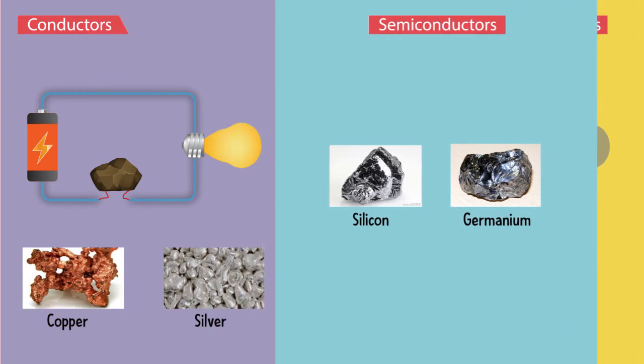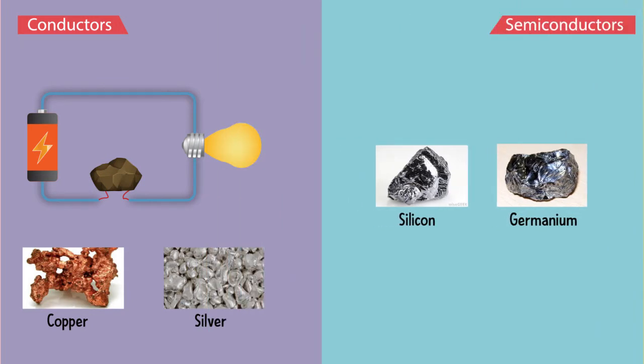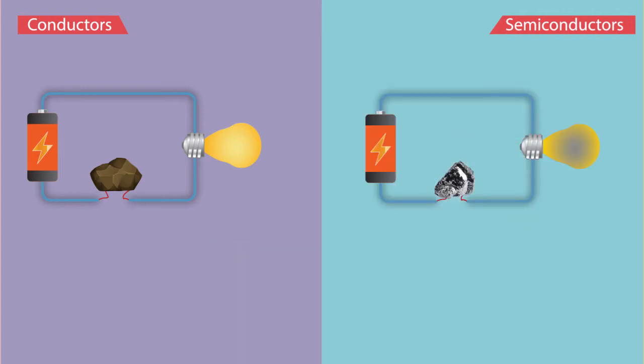Let me explain the difference between conductors and semiconductors. Conduction is very high in conductors, but conduction is present in semiconductors though it is very poor. Resistance is low in conductors, whereas resistance is high in semiconductors compared to conductors.